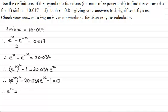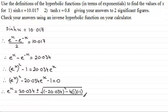e to the x equals minus b so that's going to be 20.034 plus or minus the square root then of b squared so that's going to be minus 20.034 all squared minus 4 times a which is 1 times c which is minus 1. And all of that is divided by 2 times a, 2 times 1, just 2.